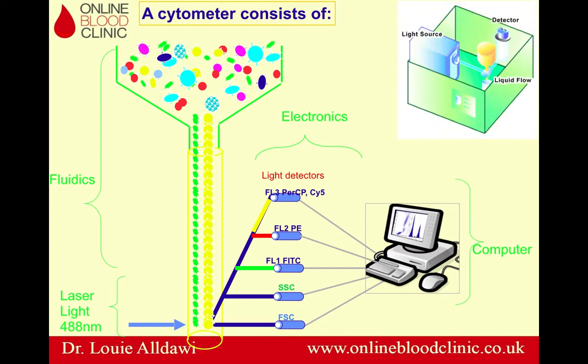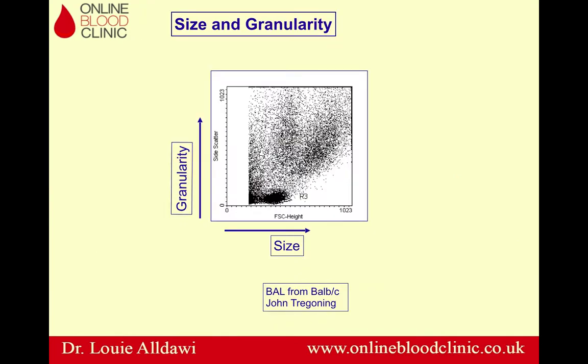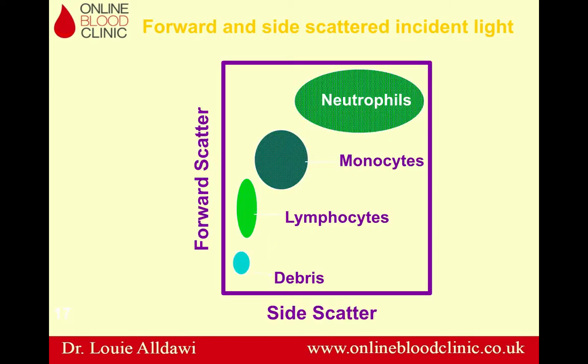This is a diagram of the real flow cytometer, which has three main components: light source, detectors, and liquid flow. This diagram shows forward scatter and side scatter. Big cells will be high in forward scatter; small cells will be low. Granular cells will be high in side scatter; non-granular cells will be low in side scatter.